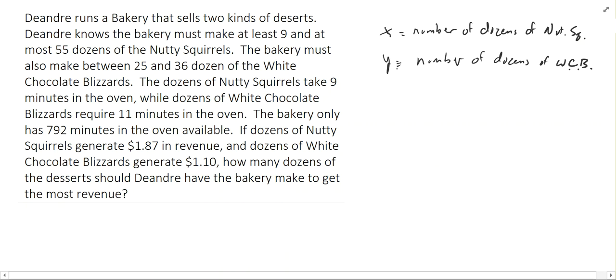And our relationships that we have: we know that X, the number of nutty squirrels, must be at least 9 and at most 55. So we have a constraint there that X needs to be between 9 and 55. And similarly, we know that Y needs to be between 25 and 36.